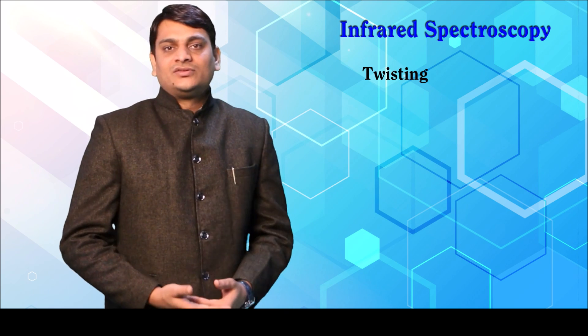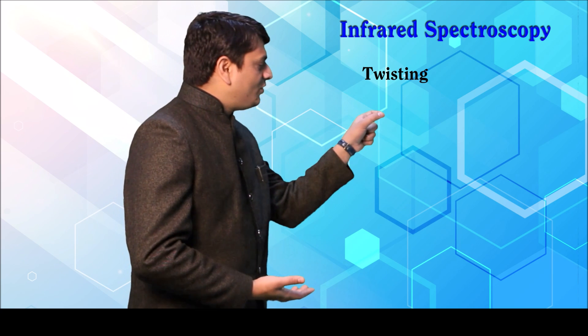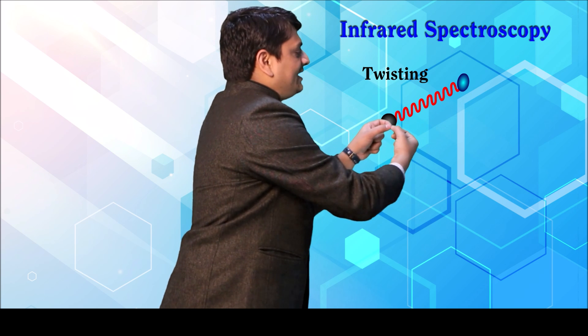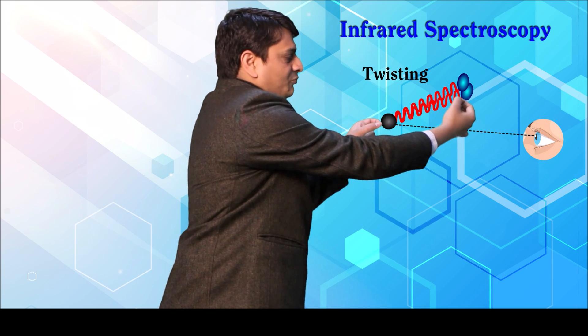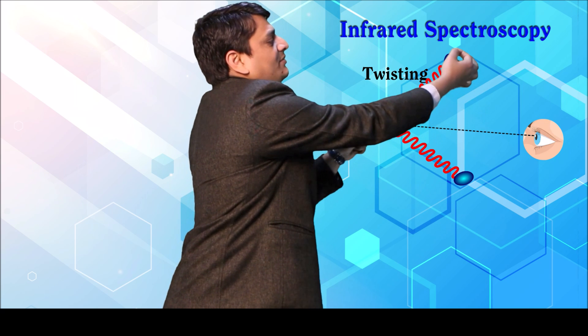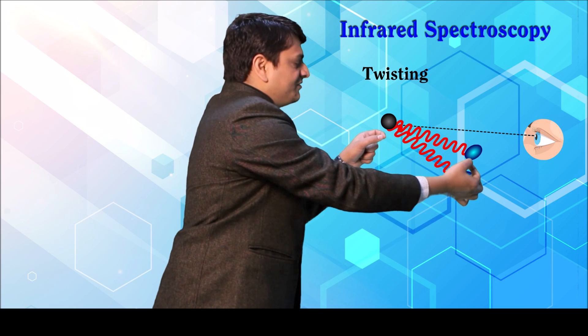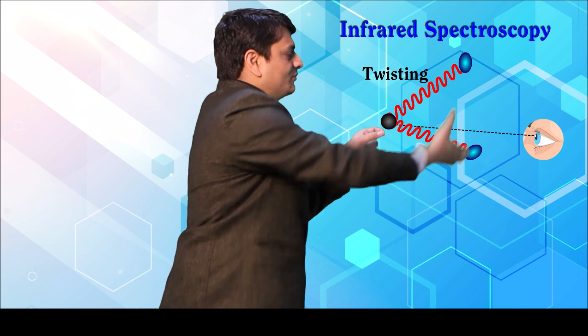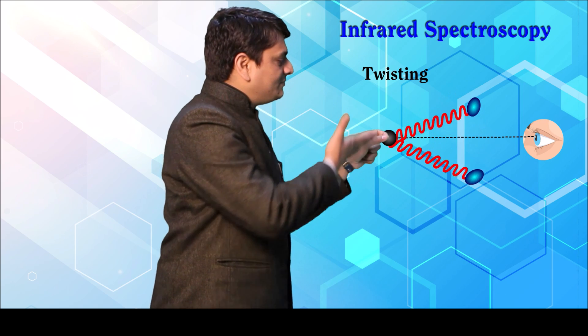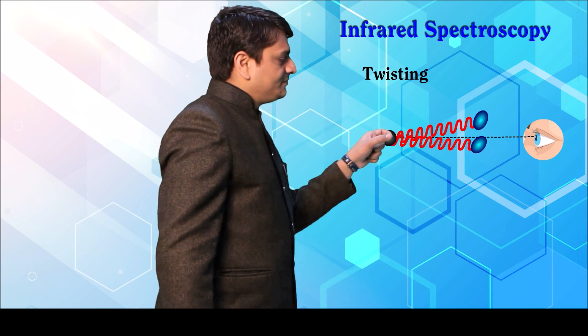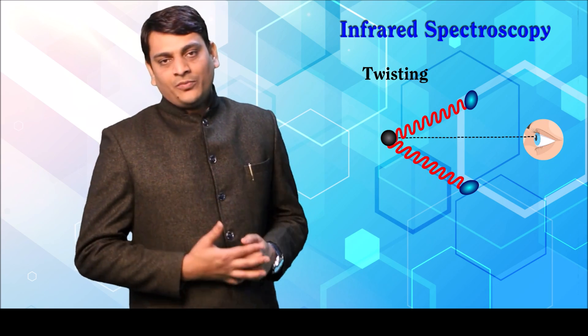In twisting vibrations, atoms of the compound are present with their bonds. If one bond is moving below the plane, the other will move above the plane — they move in opposite directions out of the plane. This is the complete detail about basics and principles of infrared spectroscopy. Thank you.